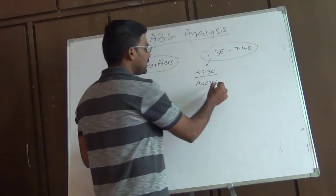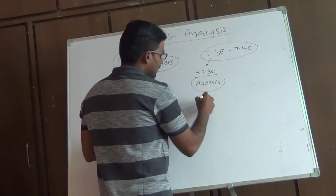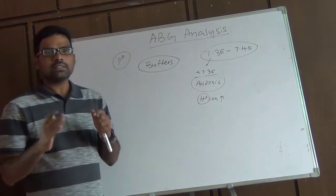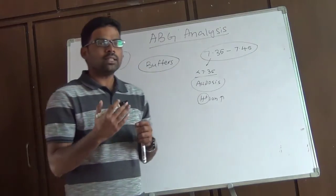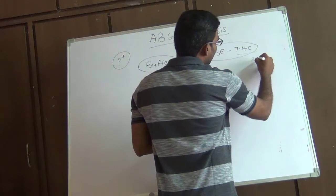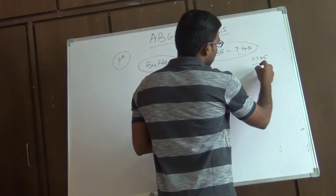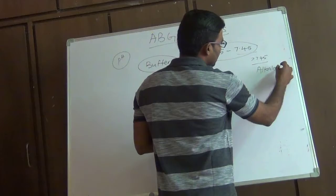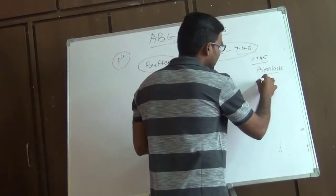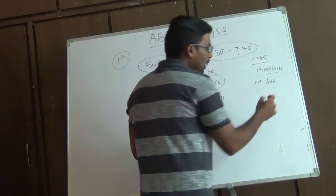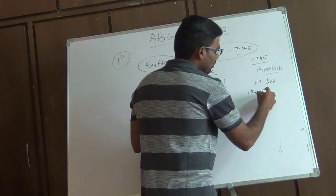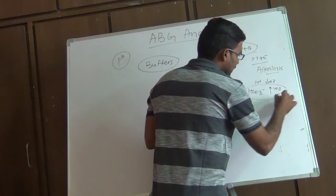If the pH is less than 7.35, this is called acidosis. In acidosis, H+ ion concentration is increased. H+ is the proton — when the concentration of H+ increases, the blood becomes acidotic. If the pH is more than 7.45, this is called alkalosis. Here the H+ or proton concentration is decreased, and the major alkalotic ion is bicarbonate (HCO3), which is increased.